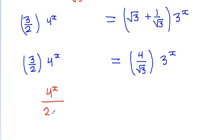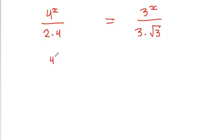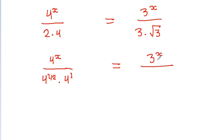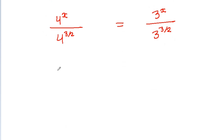Now we get 4 to the power x divided by 4 is equal to 3 to the power x divided by root 3 times 3. Rearranging, we get 4 to the power x divided by 4 to the power (3/2) is equal to 3 to the power x divided by 3 to the power (3/2), which gives us 4 to the power (x minus 3/2) is equal to 3 to the power (x minus 3/2).